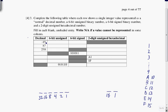Let's represent negative 15. That is a negative number, and the 6-bit unsigned column can't represent negative numbers, so that's N/A — a nice easy start. As a 6-bit signed number, we know it's negative, so we'll eventually want a 1 in the first bit, but first we need to figure out how to represent its magnitude: the absolute value of negative 15, which is 15.